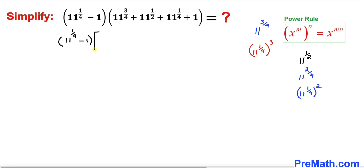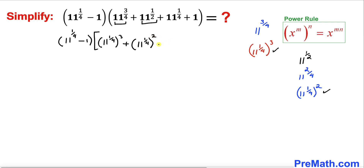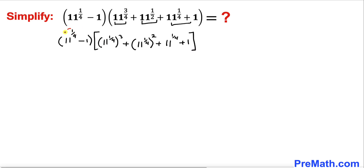Therefore, our expression can be rewritten as: 11 power 1 over 4 minus 1, times 11 power 1 over 4 whole cubed, plus 11 power 1 over 4 whole squared, plus 11 power 1 over 4, plus 1.